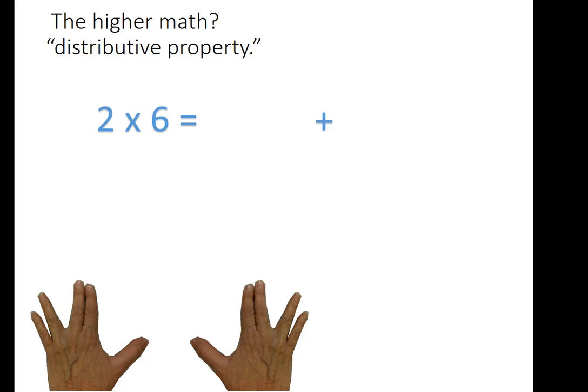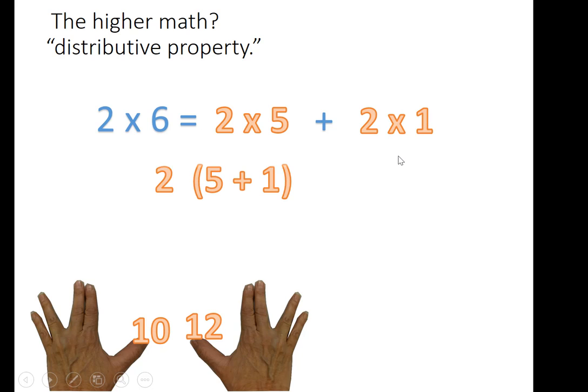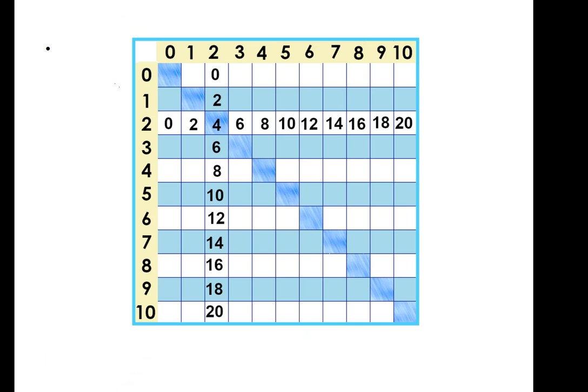This is also, in higher math, called the distributive property. Two times six is two times five plus two times one. And it can be written like this: two times the sum of five plus one. For now, let's just make sure we learn the facts. There they are.